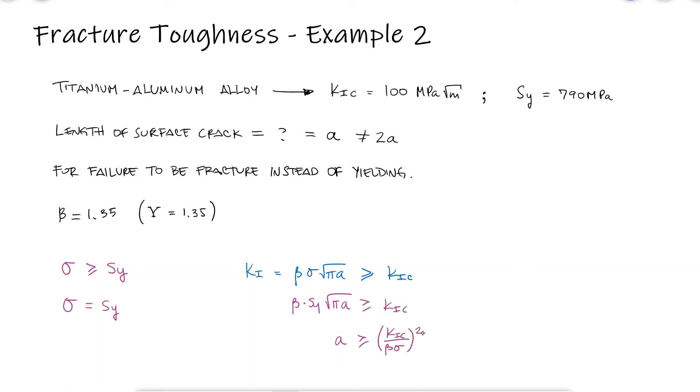Solving for A in this inequality shows us that A has to be at least 2.8 millimeters in length. Any cracks smaller than 2.8 millimeters would allow us stress greater than the yield strength and not cause any fracture, which means that the material would be deforming plastically before breaking.